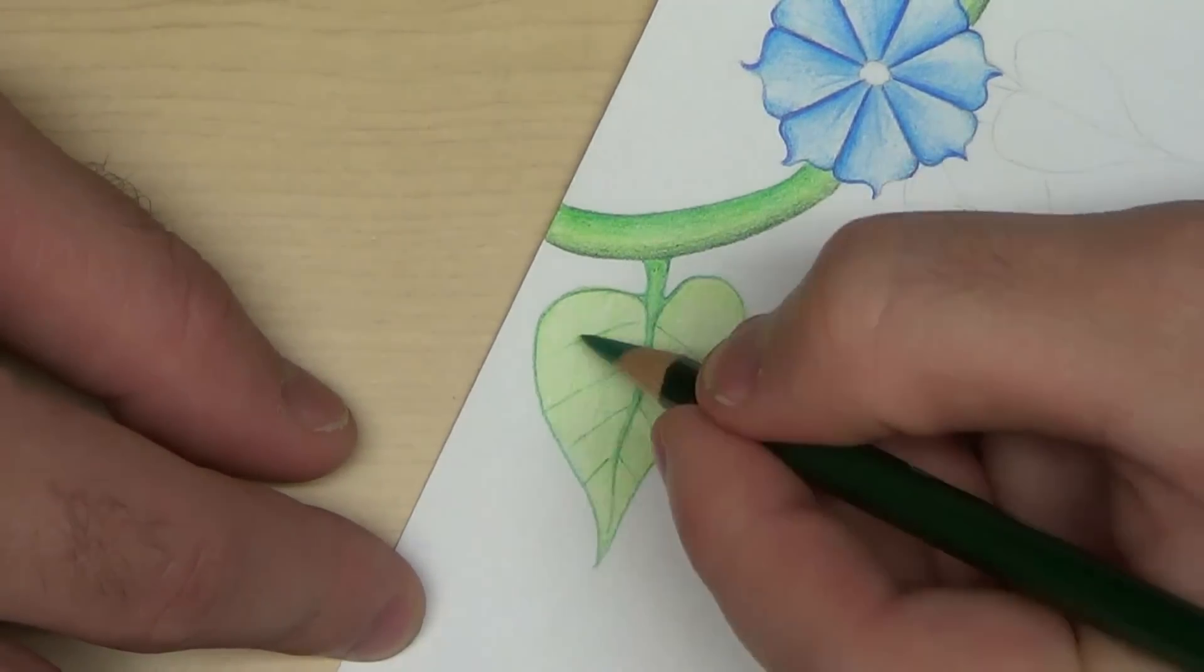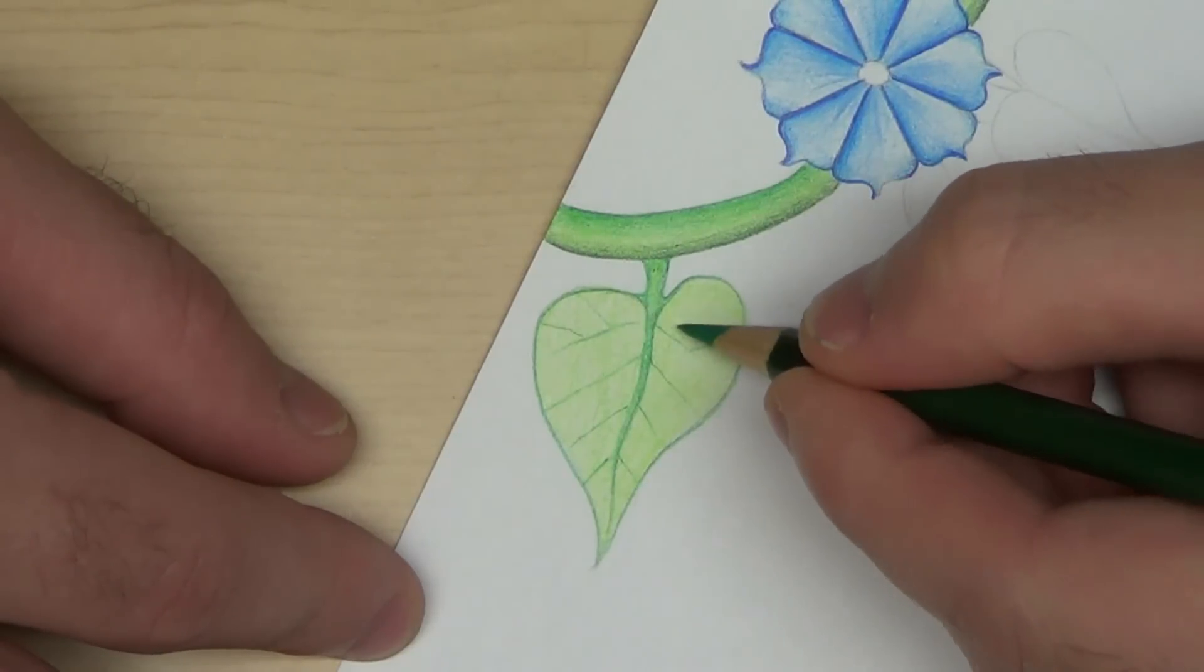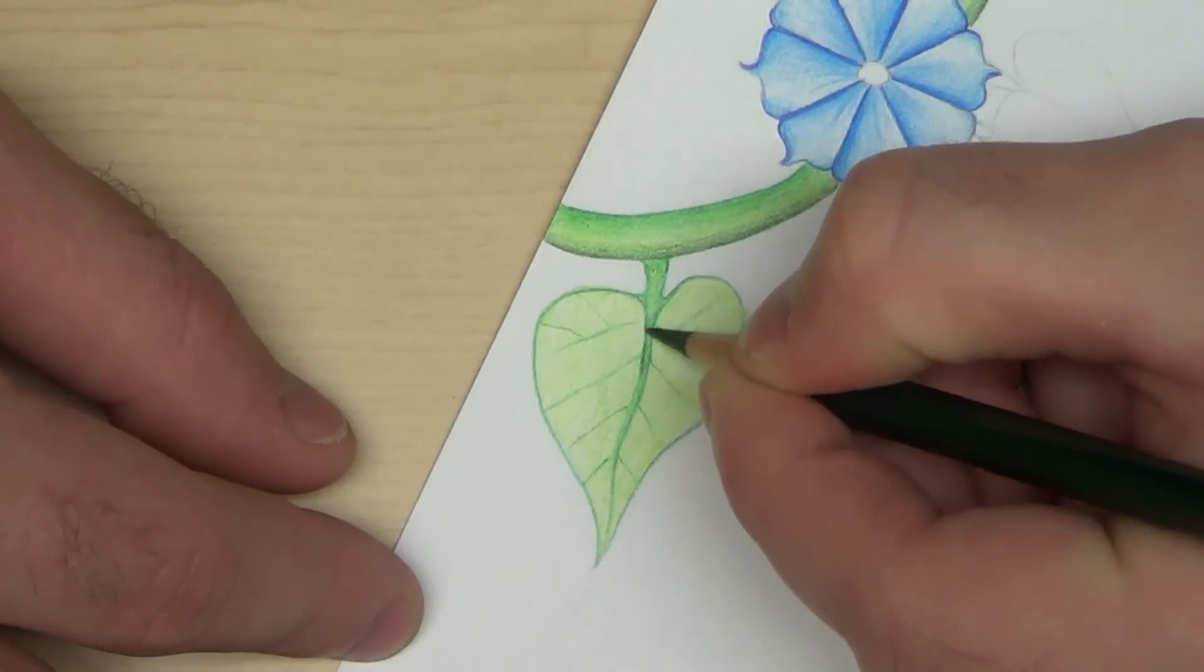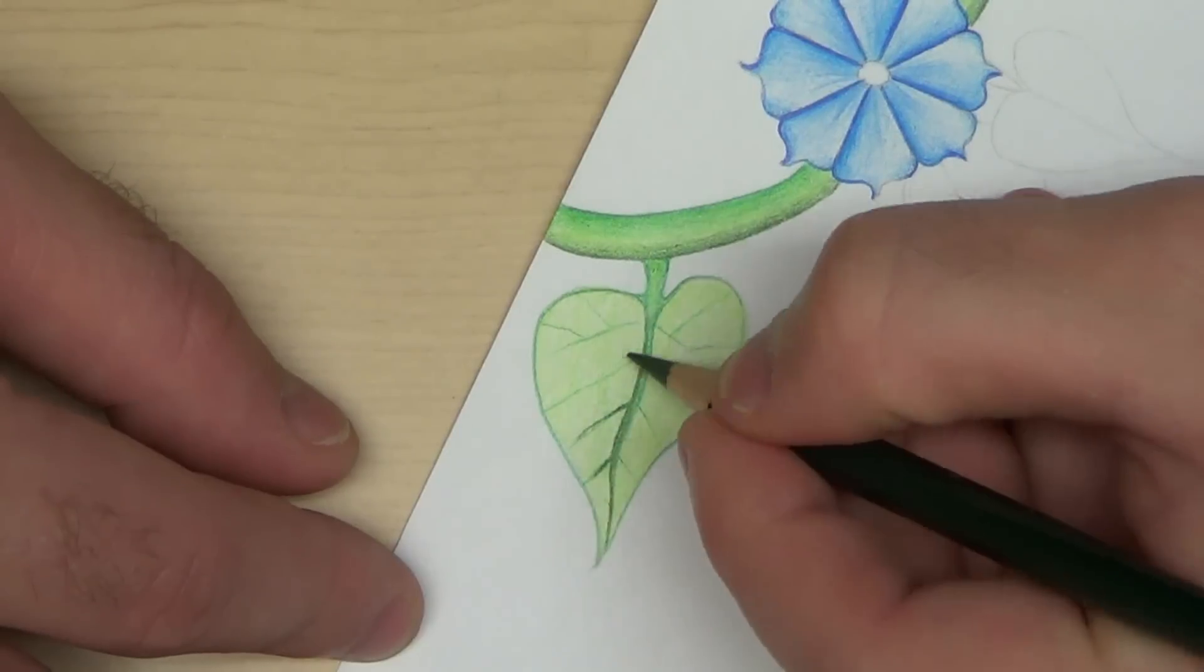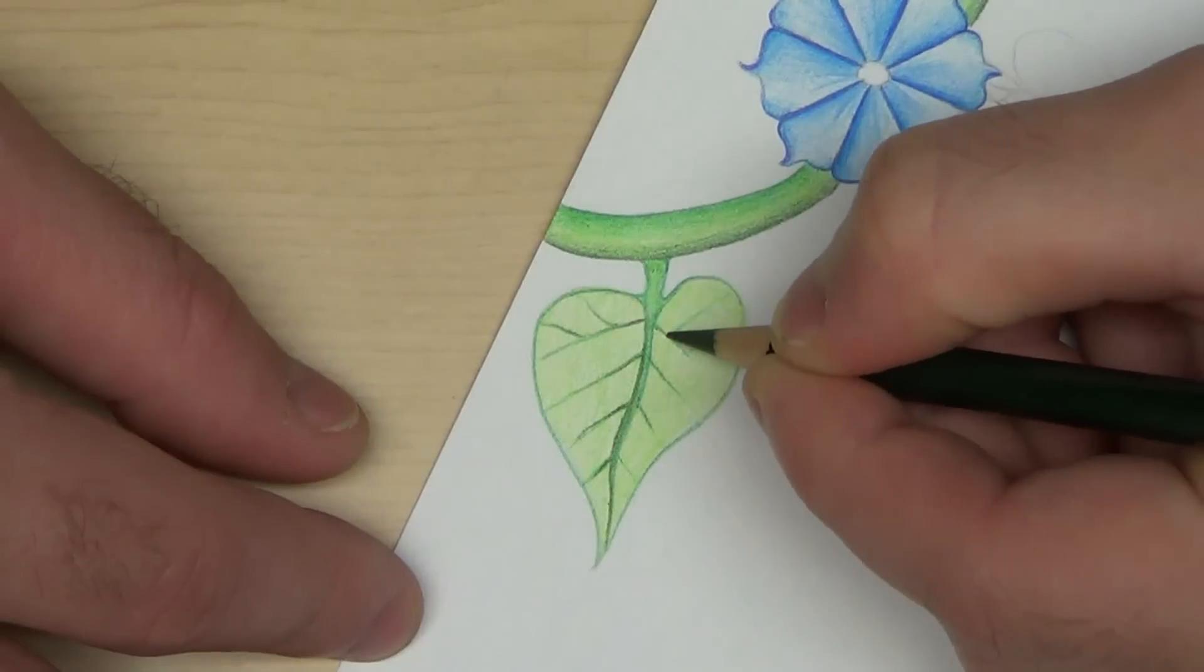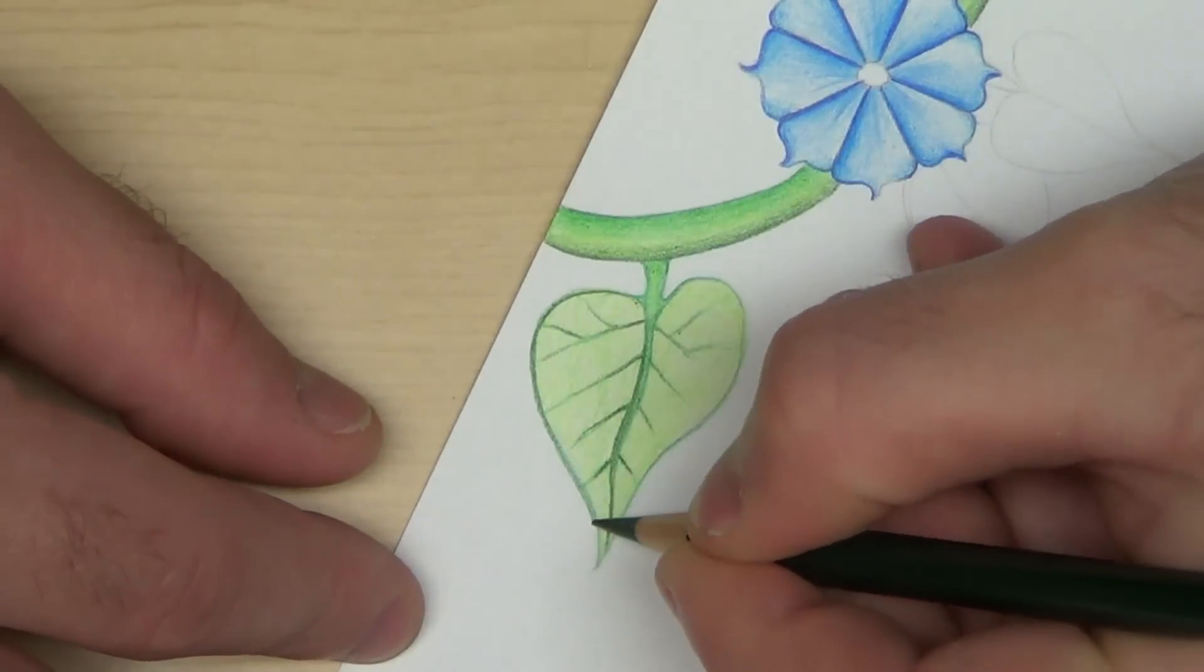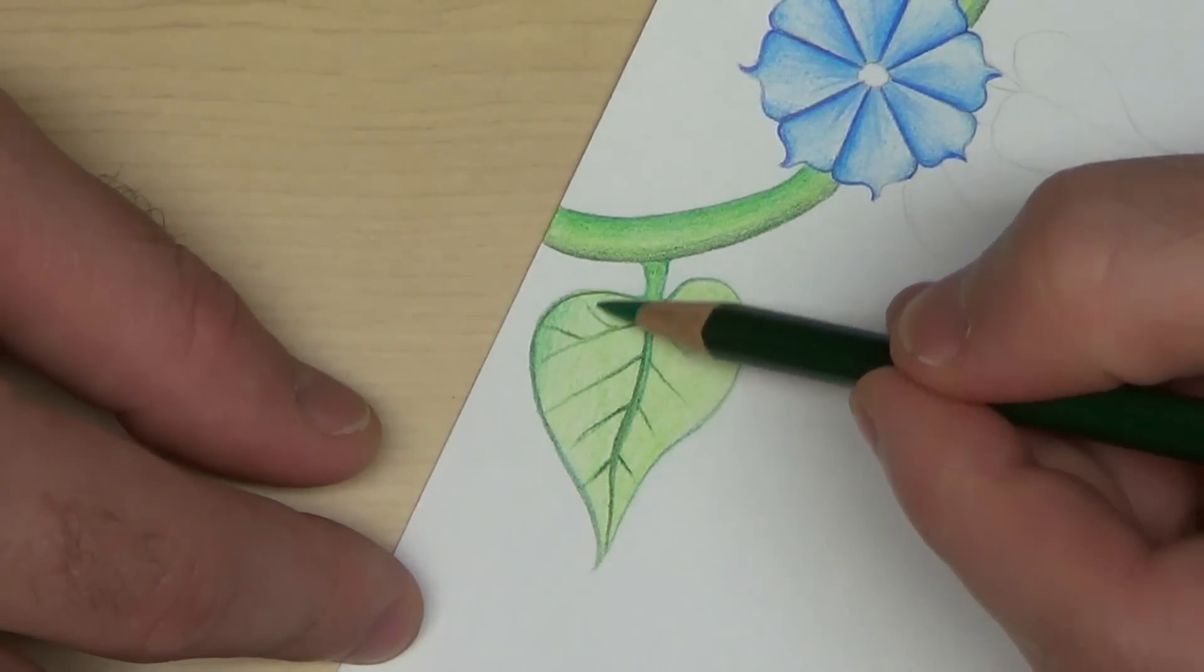Because if you're using Prismacolor, they blend really easy. And I noticed that when I went to shade this, it will kind of blur the colors together a little bit. See how I'm using the darker green now to kind of darken it up. And then I outline it with the darker color too.